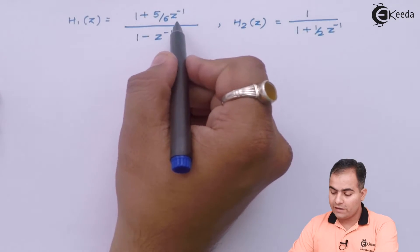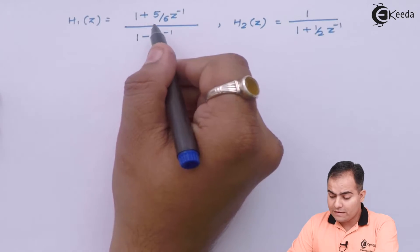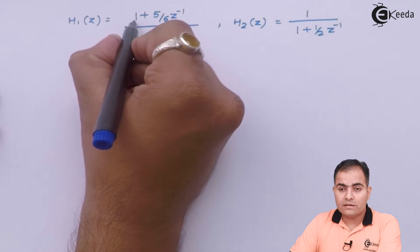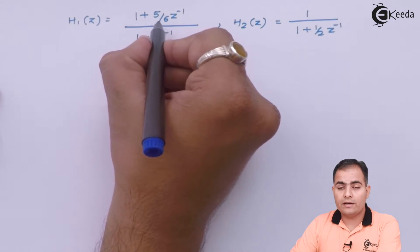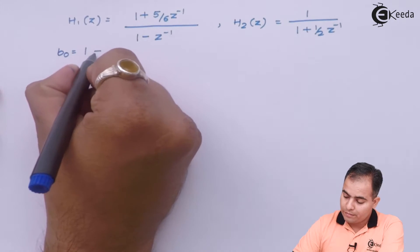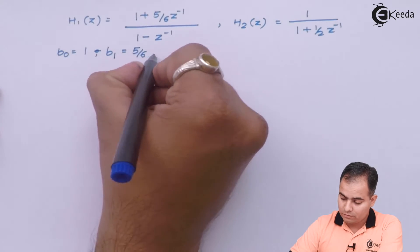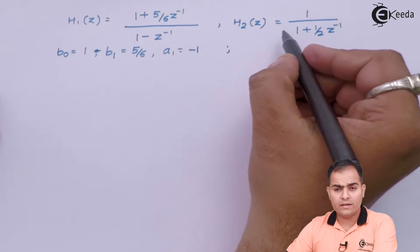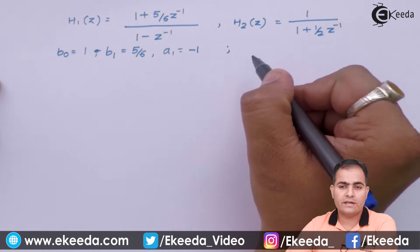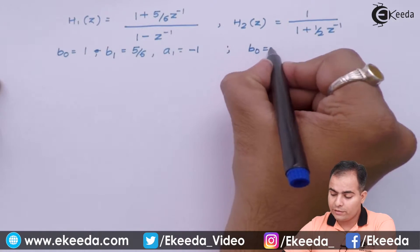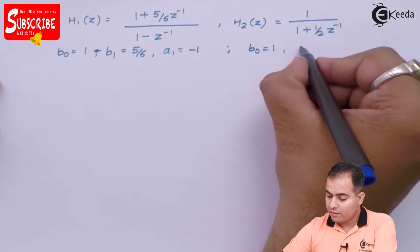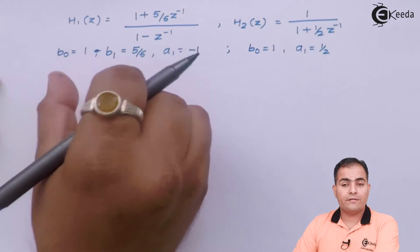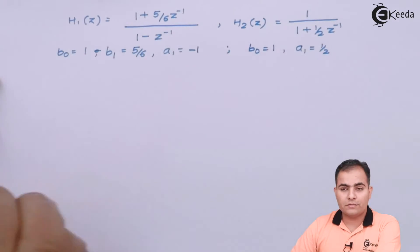H1(Z) = (1 + 5/6 Z⁻¹) / (1 - Z⁻¹). Comparing with the standard transfer function format, we get B0 = 1, B1 = 5/6, and A1 = -1. For H2(Z) = 1 / (1 + (1/2)Z⁻¹), comparing with the standard form gives B0 = 1 and A1 = 1/2. Now we will draw the two DF2 structures — the first for H1(Z) and the second for H2(Z).